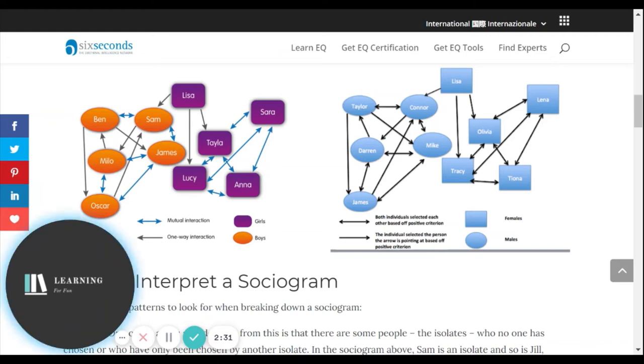For example, if you pay attention to the left figure, there are certain individuals present here. Their names are written. Just for the purpose of classification, the girls are in purple shade rectangles and the boys are in the ovals of orange.